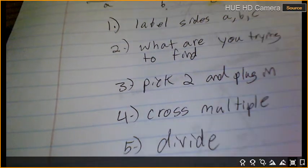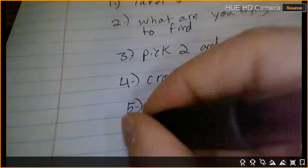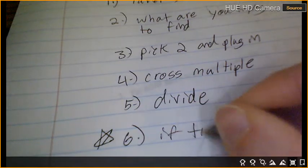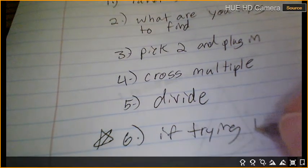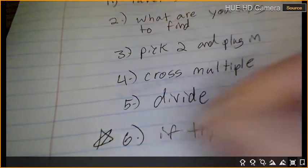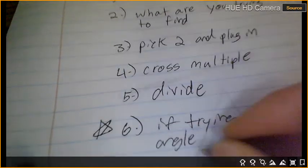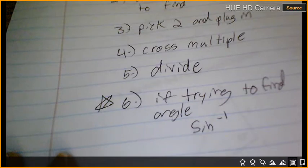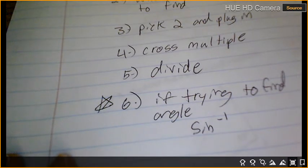And there's only a sixth step if you're looking for an angle. So six is only if I'm looking for an angle. So if trying to find an angle, use inverse sine. Questions?